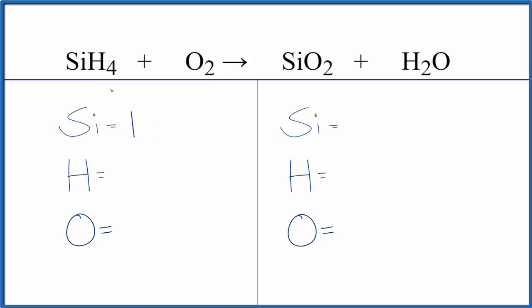We have one silicon atom, four hydrogens, and two oxygen atoms. Product side we have one silicon, two hydrogens, and two oxygens here. And remember we have one more oxygen with the water. Got to count that one too.